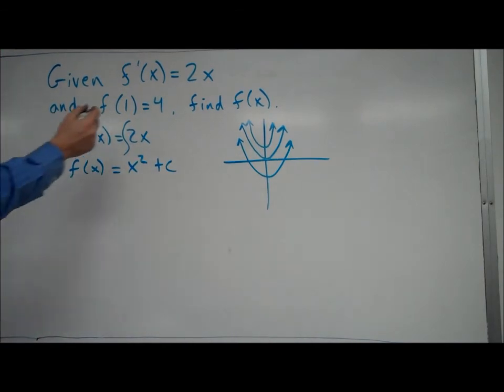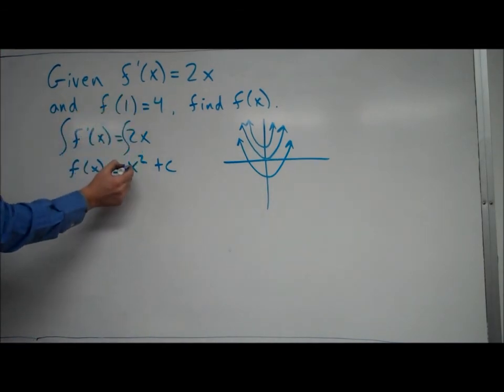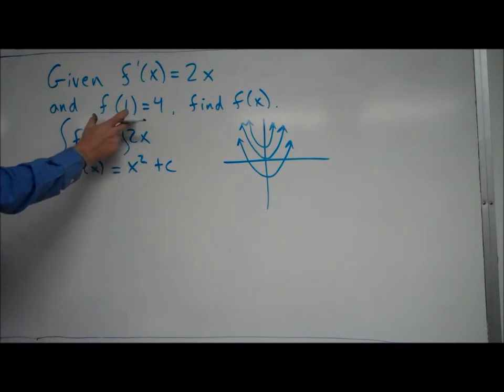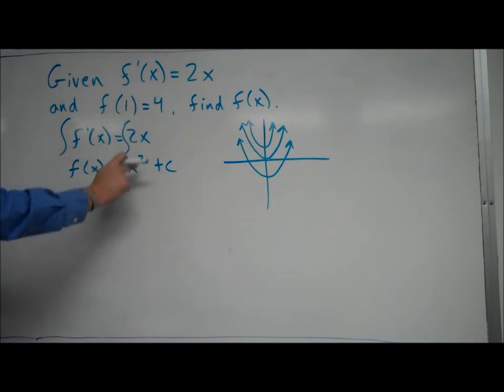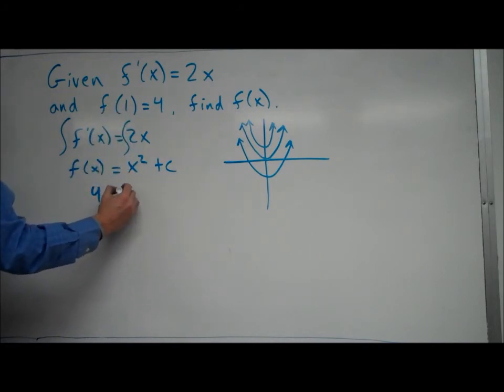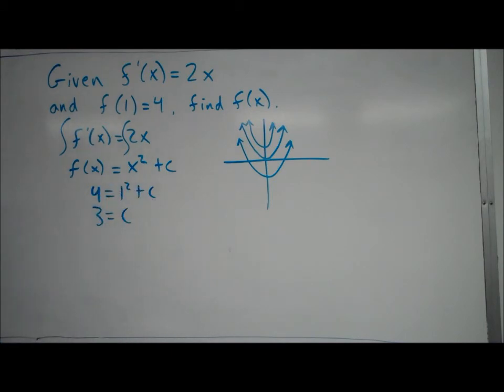So to use that, we take 1, we plug it in for x, because this is telling us that f of 1 equals 4. So when x is 1, the function equals 4. So we take 1, we plug it in for x, and the function should equal 4 when we do that. So we're going to set it equal to 4, and we're going to plug 1 in for x, so it'll just be 1 squared, so it's just 1. And then to find c, I just subtract 1 from both sides, and I get that c is equal to 3.